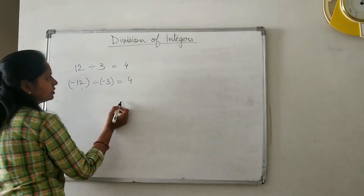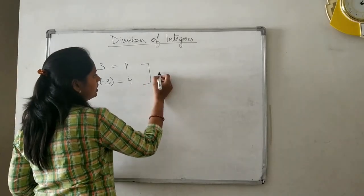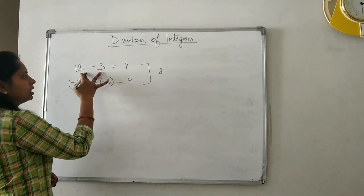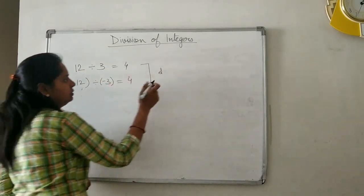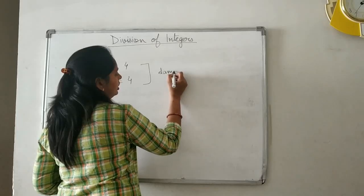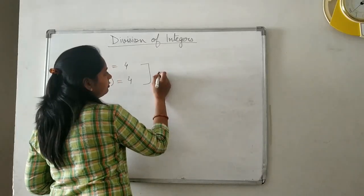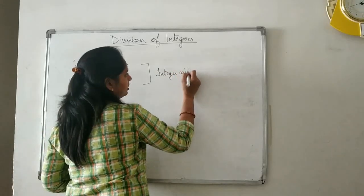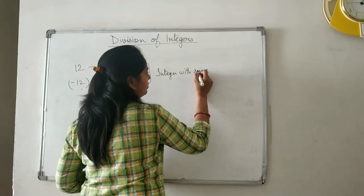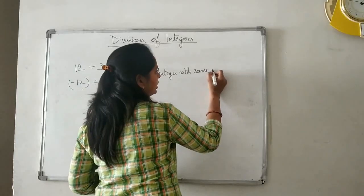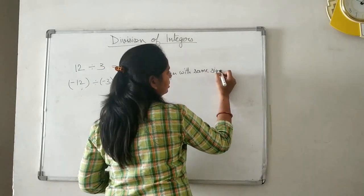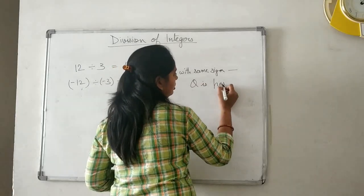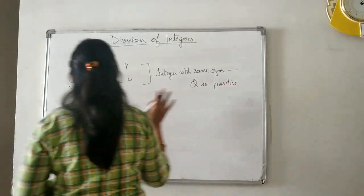This means if you are having two integers of the same sign — both positive or both negative — then the quotient is positive. In both cases, the quotient will be positive.